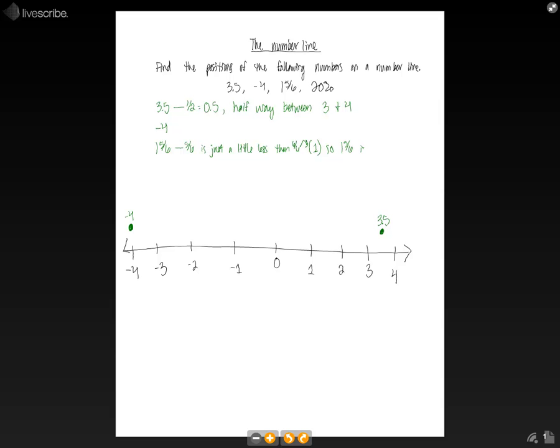So that means that 1 and 5 sixths is a little less than 2. If we go down to our number line and go just a little bit below 2, that's where 1 and 5 sixths will lie.